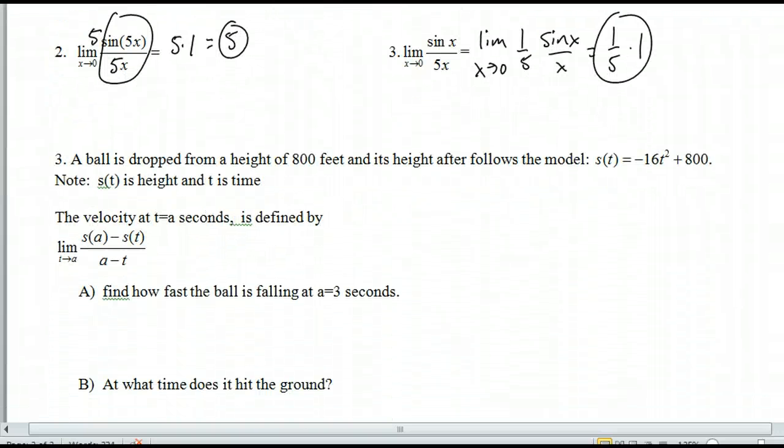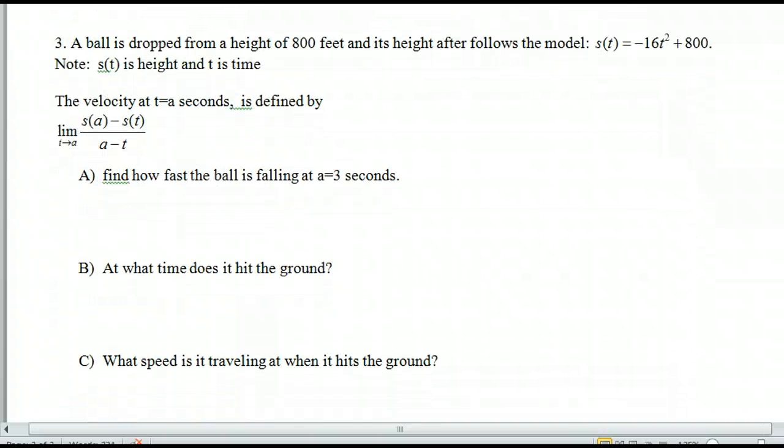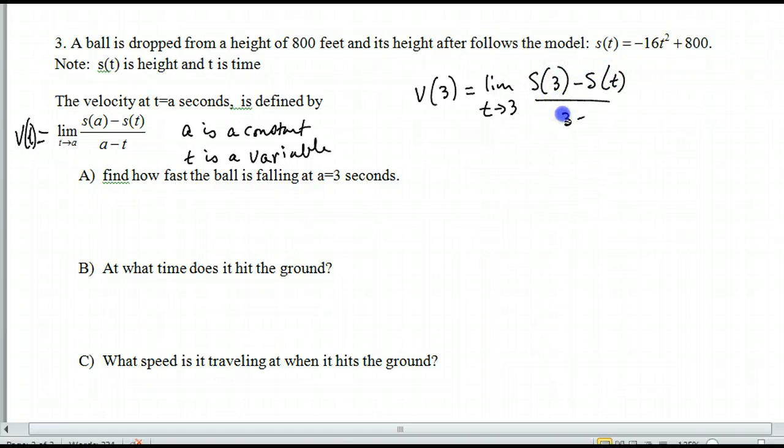Now, we're going to go to the definition of the velocity function. This right here is instantaneous velocity. That's the velocity definition. It's the limit as t goes to a of s(a) minus s(t) all over a minus t. a is a constant, and then t you keep as a variable. Under this situation, we drop a ball from 800 feet, and it's modeled by this right here. What we want to do is find out how fast the ball is falling at a equal to 3.